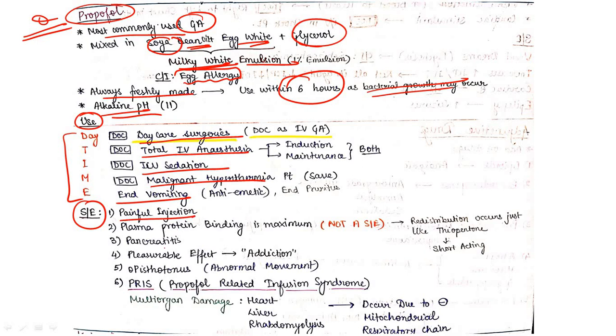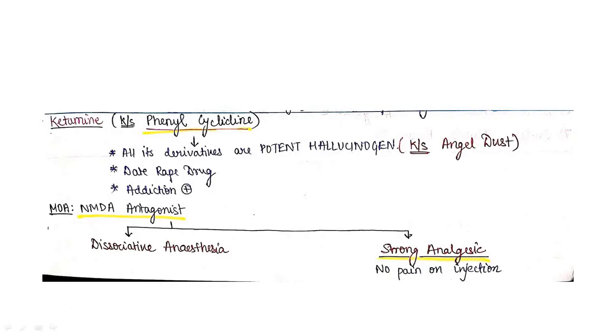Side effects of propofol: remember PPPP - Painful injection, maximum Plasma protein binding, Pancreatitis, Pleasurable effect with risk of addiction, Opisthotonus (abnormal movement), and PRIS (Propofol Related Infusion Syndrome) leading to multiple organ damage due to inhibition of mitochondrial respiratory chain.